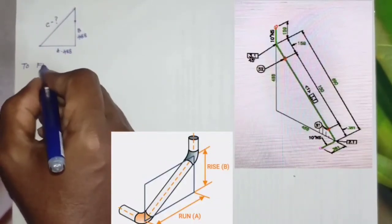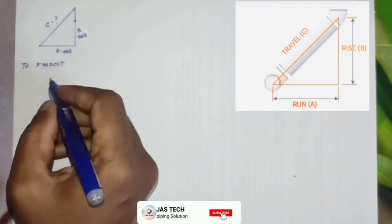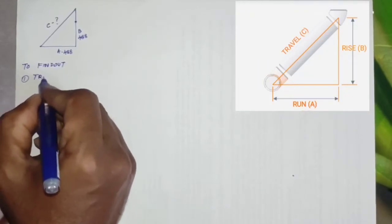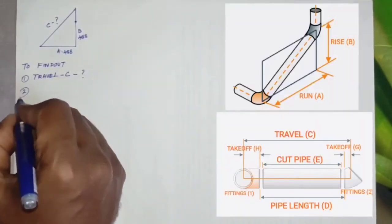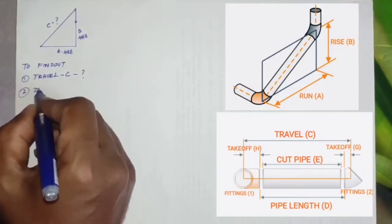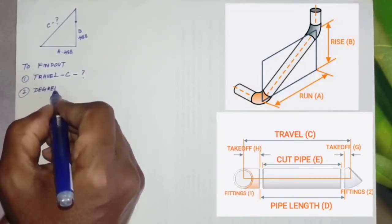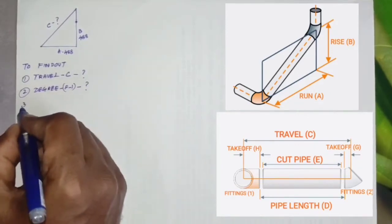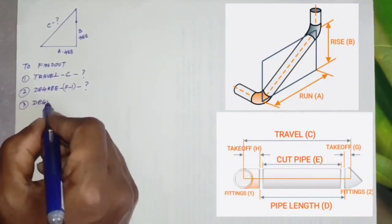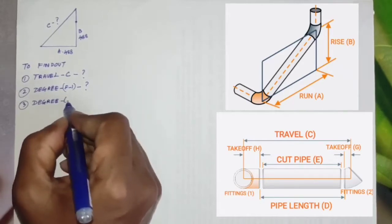Welcome to Jogstech. Today our topic is piping 45-degree rolling offset. Our lesson today: first, to find out travel C; second, to find out degree for fittings one;